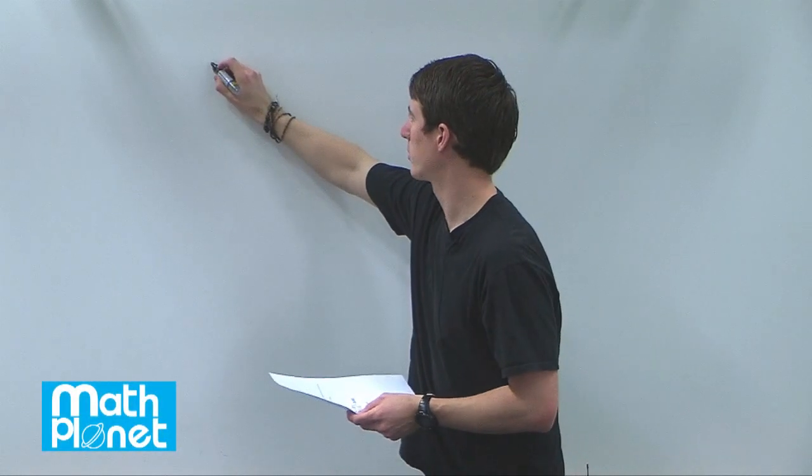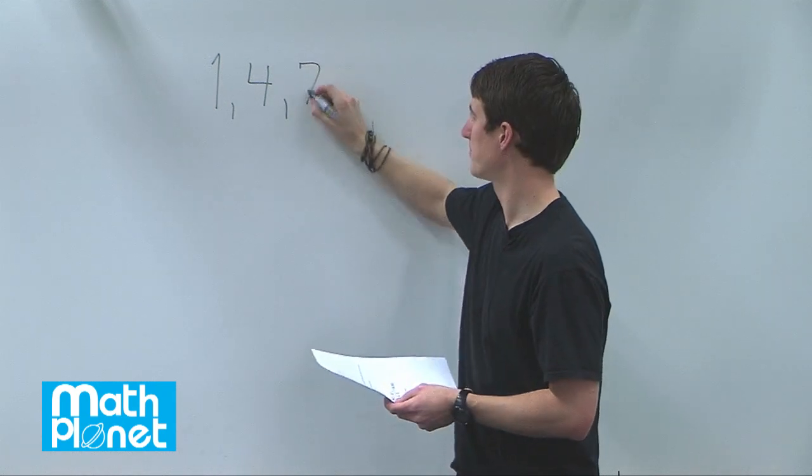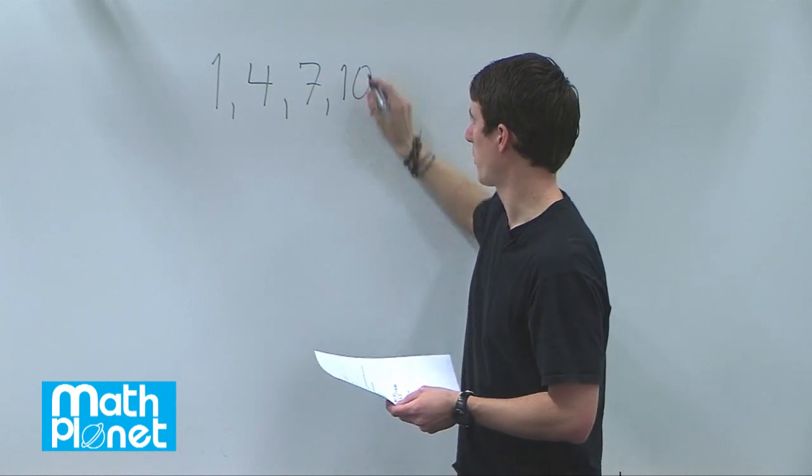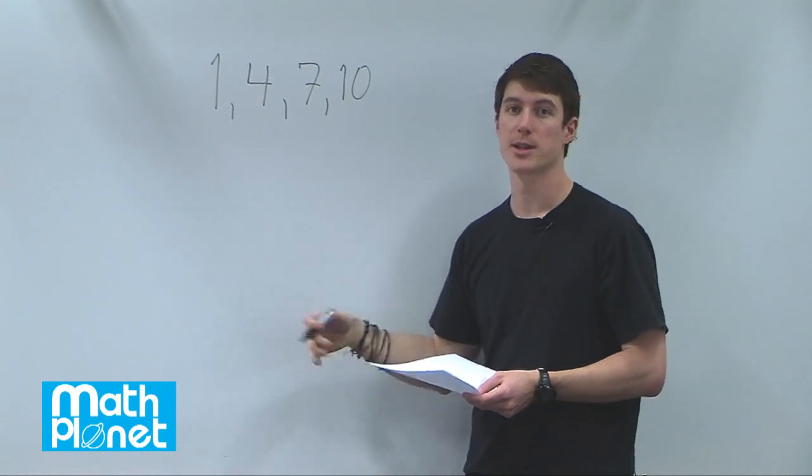If we have a series of numbers with this pattern, 1, 4, 7, and 10, and we want to find some number later in this sequence, we can use a formula to find that.